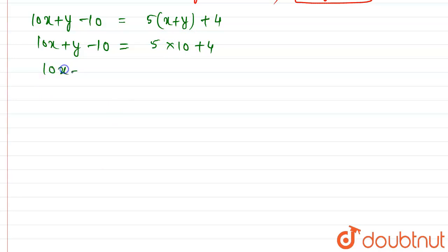So 10x plus y equals 50 plus 10, which is 64. And we're given x plus y equals 10. Now subtract these two equations: 9x equals 54, so x equals 6.